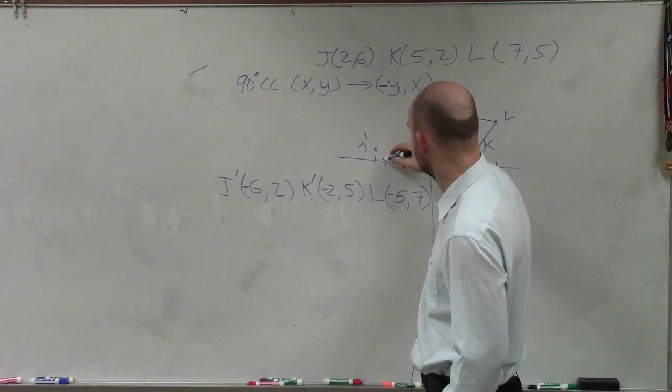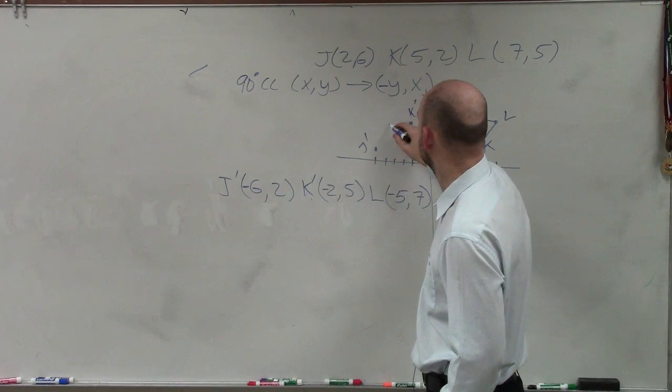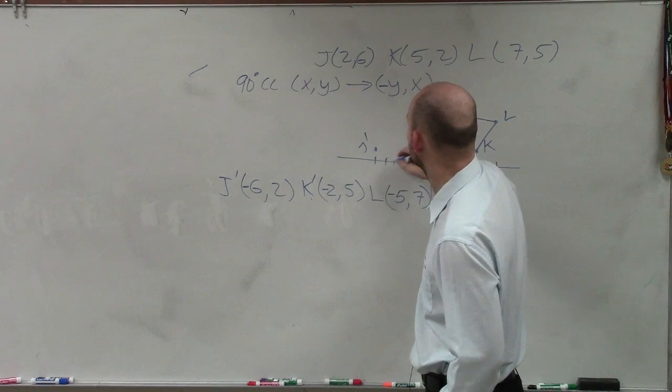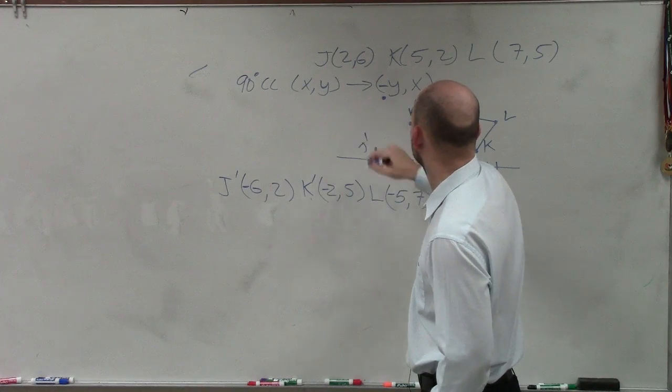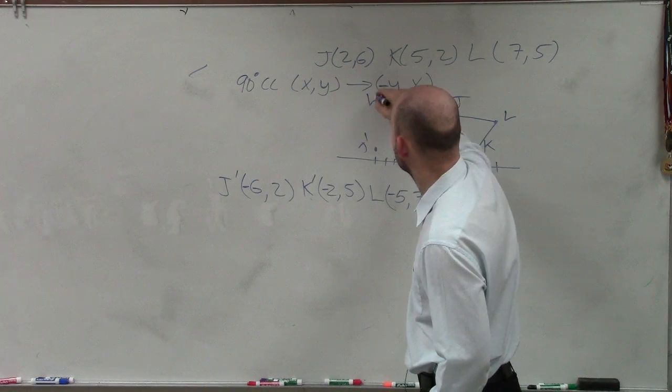And then I have negative 5, 1, 2, 3, 4, 5, up 7. 1, 2, 3, 4, 5, 6, 7, which is L prime.